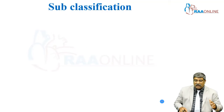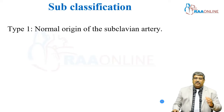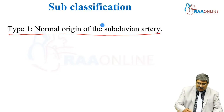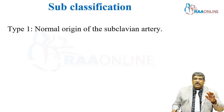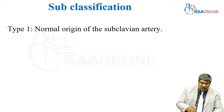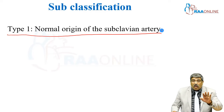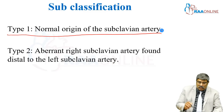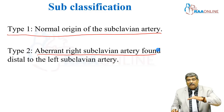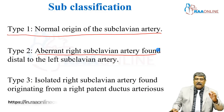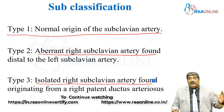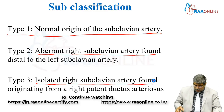The subclassification depends upon the origin of the subclavian artery. In type 1, there is normal origin of the subclavian artery. In type 2, there is an aberrant right subclavian artery found distal to the left subclavian artery. In type 3, there is an isolated right subclavian artery originating from the right patent ductus arteriosus.